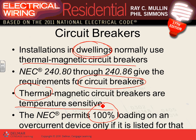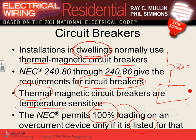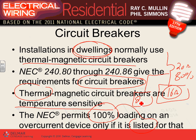Loading a circuit breaker at 100% continuously is only for listed 100%-rated equipment. For example, a 20-amp circuit breaker — you can only carry 80% of that, which is 16 amps, continuously. Unless the circuit breaker is marked as 100%-rated, it is rated for 80% continuous. Non-continuously, you can carry the full 20 amps.